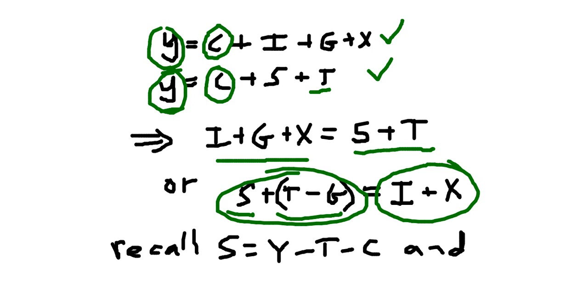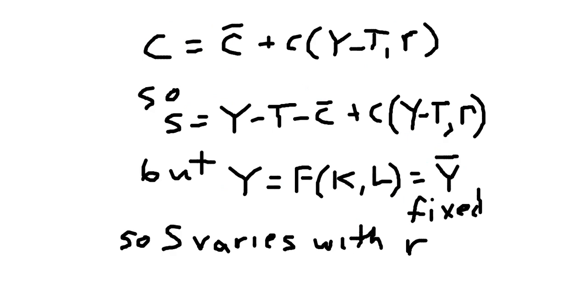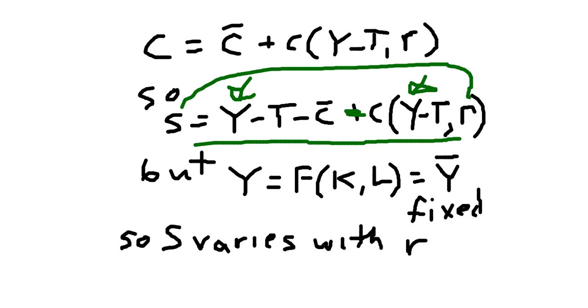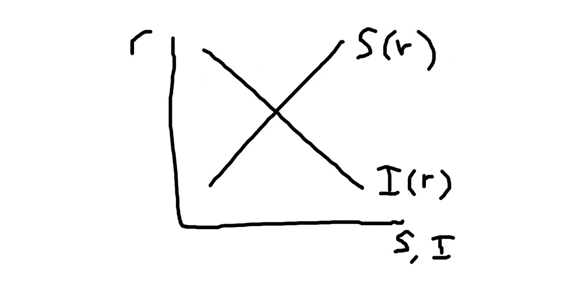So, given this identity, recalling that savings is equal to y minus t minus c, savings depends on the interest rate, because consumption there depends on the interest rate, that means we can rewrite this, and have savings depending on the interest rate, and this should be a minus sign here, not a plus sign. So, y is fixed, so since y in this equation is fixed, and y here is fixed, we have a relationship between this amount of savings that goes on in the economy and the interest rate. So we can graph that, where we have savings responding positively to the interest rate, and investment responding negatively to the interest rate.